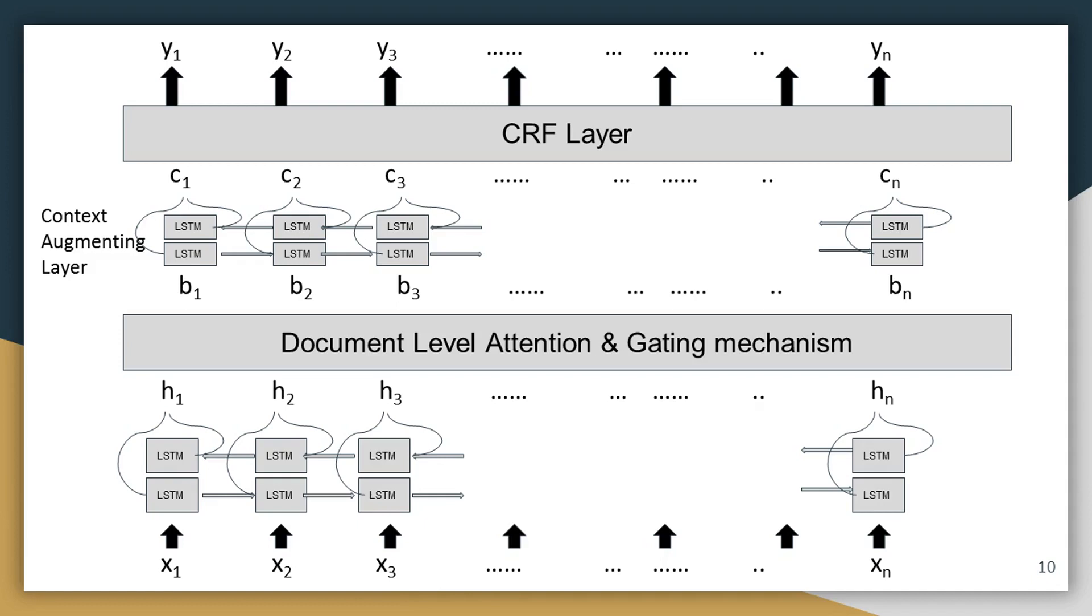This LSTM layer setup is similar to LSTM layers at the bottom, but the difference here is that the representation of inputs where additional supporting information is also taken into account. So we call this layer as context augmenting layer. And finally, we obtain c1 to cn which we send into CRF layer to obtain the labels y1 to yn.